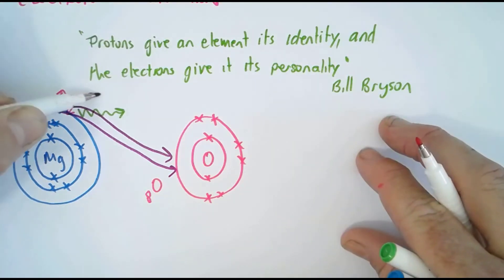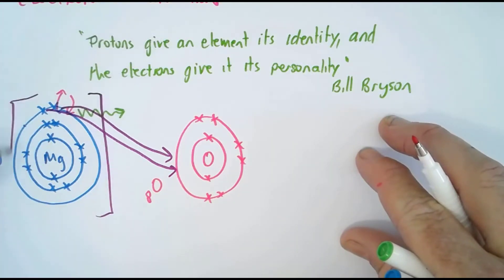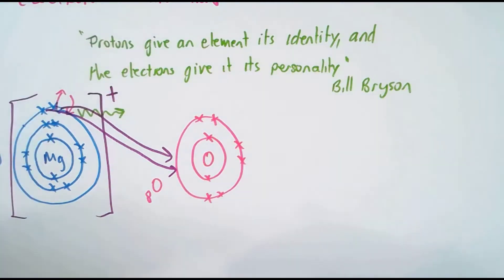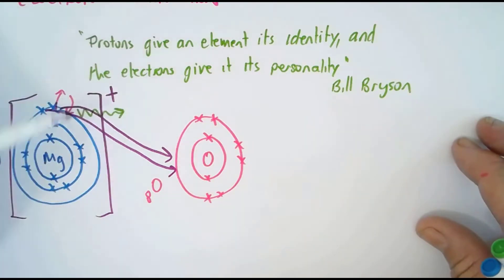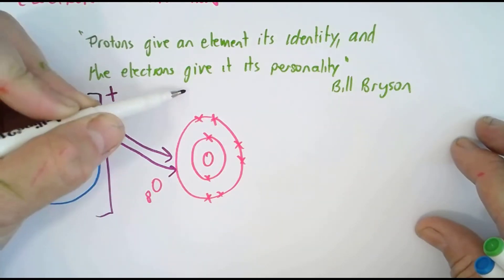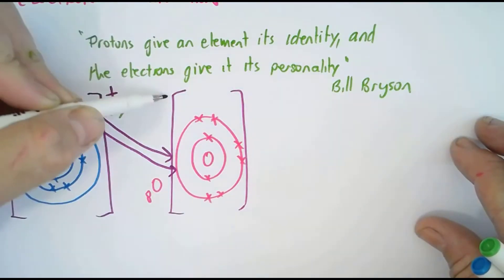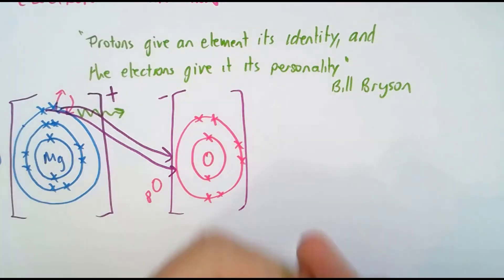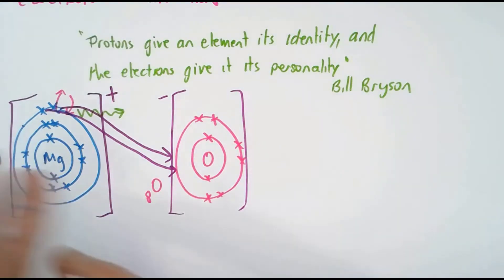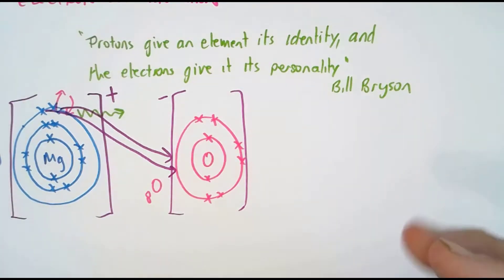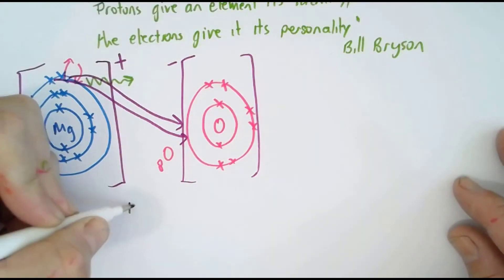Ultimately then what happens is that magnesium will then have a positive charge, because it's given away things that are negative, two things that are negative. Oxygen has received two electrons which are negative, so it then ends up with a negative charge. So these two are now what we call ions, and they're attracted to each other by this electrostatic charge. So opposites attract, don't they? So they are held together in a chemical bond because magnesium has donated electrons. So that's essentially what we call an ionic compound.